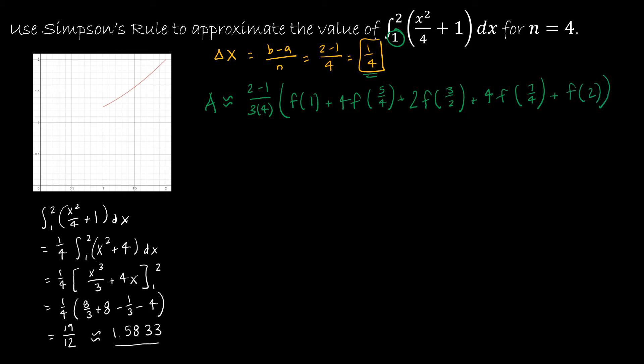That is how I'm going to find my solution. 2 minus 1 is 1, and 3 times 4 is 12, so I have 1 over 12. I'm going to plug in 1 to my function: f of 1 is 1 squared divided by 4 plus 1, which is 5 fourths. Plugging in 5 fourths and multiplying by 4 gives me 89 sixteenths, then 25 eighths, 113 sixteenths, and 2. I'm going to find an exact answer, which is 19 twelves, and an approximate answer, which is 1.5833.